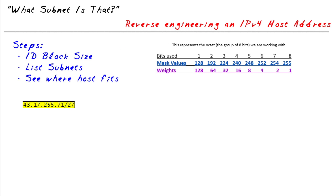Here are the steps we can follow to reverse engineer it. There's the actual IP address. We know that the first three octets are all going to be network because we have a slash 27. So the first 24 of the subnet are going to be 43, 17, 255, and then we need to slice and dice that last octet. We're going to use this chart up here to represent, in our example, the fourth octet of this customer's IP address.